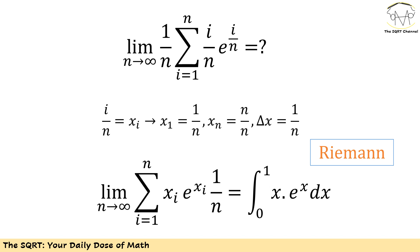Now I'm going to use Riemann sum. Here I'm going to change what I have from sigma to integral, and it's going to be between 0 and 1: x e to the power of x dx.